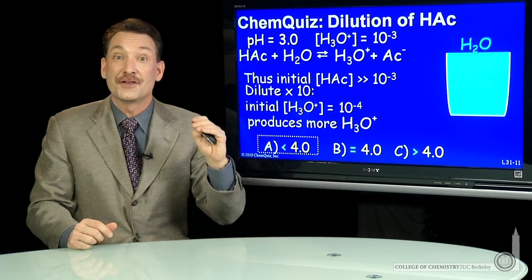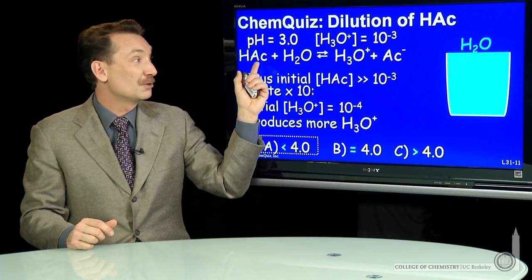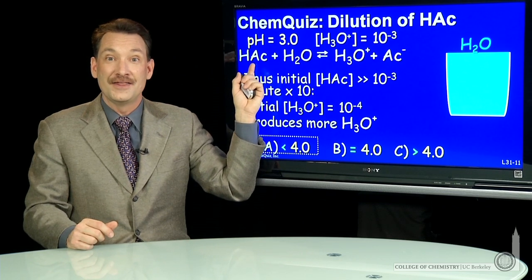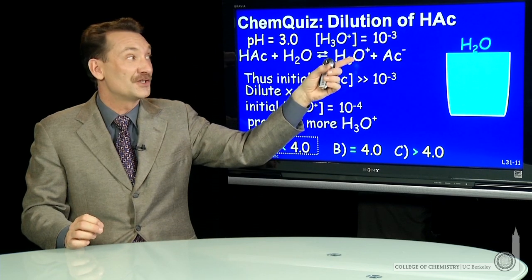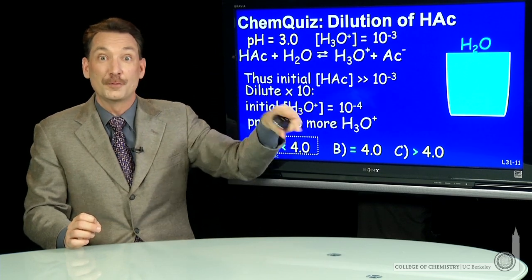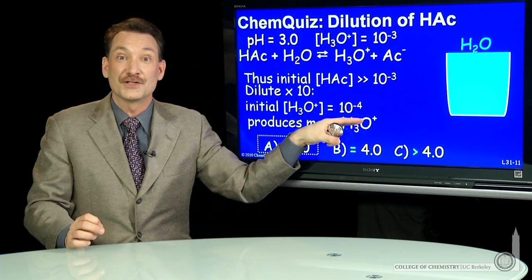Now that's interesting. If you did the strong acid and this was HCl, that totally dissociates. So you have H3O+ 10^-3 originally. You dilute by a factor of 10, it goes to 10^-4.